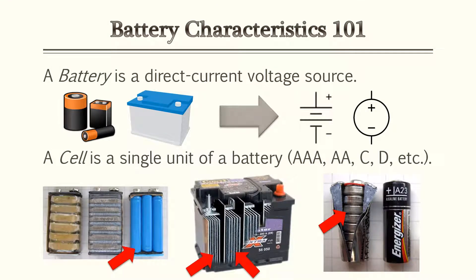For this lesson, we'll be going over battery characteristics and a few fundamentals of batteries. Batteries are considered DC voltage sources. Simple batteries include your household batteries or your car battery. A cell is a single unit within the battery. Some batteries may seem like one unit, however batteries consist of many cells, such as your car battery, your 9-volt battery, and RC car batteries.